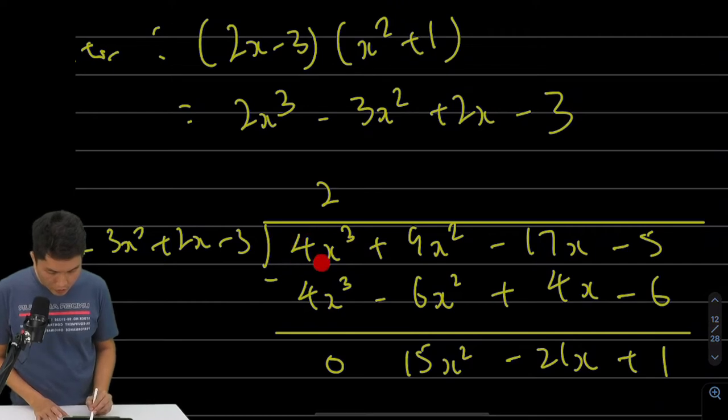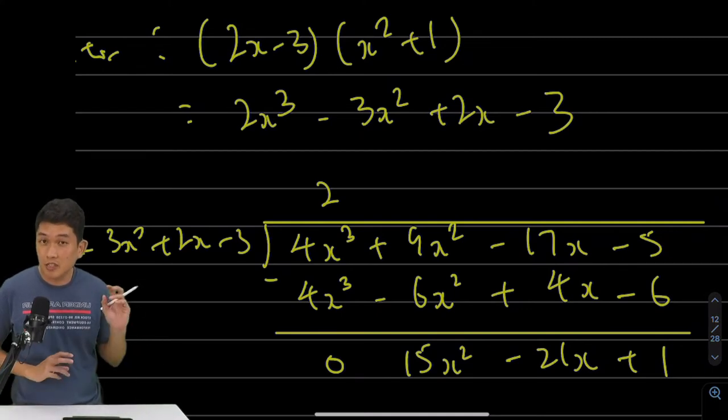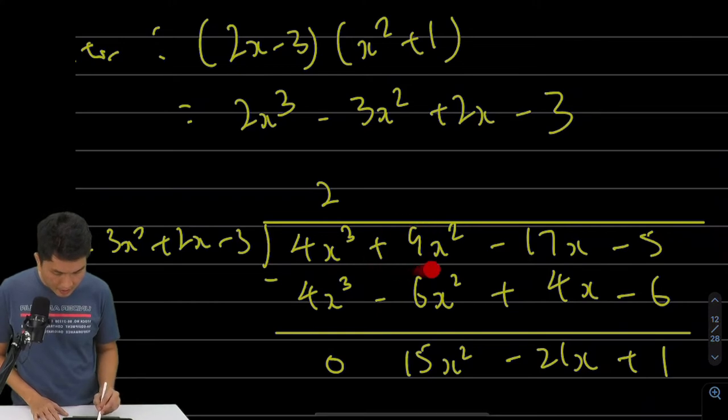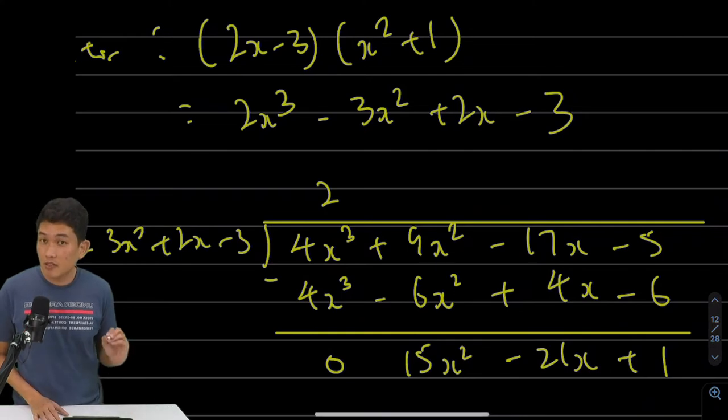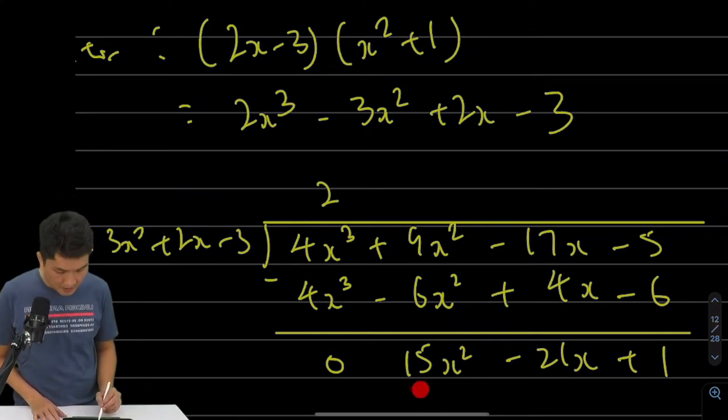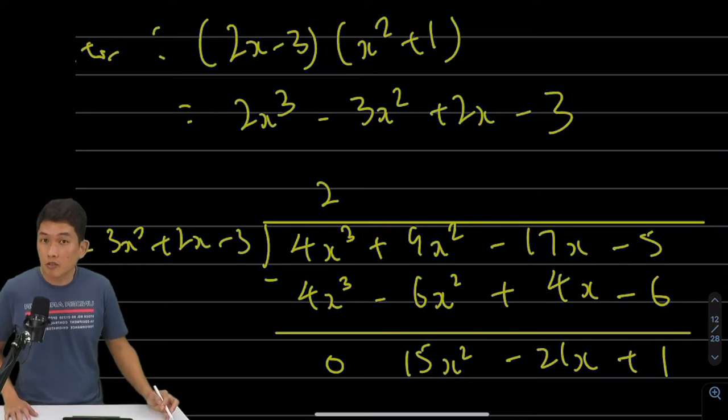So a 4x cube minus a 4x cube is 0. That is great because that means I have managed to get rid of the degree 3 term. Next, next term is 9x square minus a negative 6x square. So this is also where students might make mistakes. They might take 9 minus 6. That's actually 9 minus negative 6. So that's a 9 plus 6. That will give us a 15x square. Now if you carry on with the rest, you should get this. And this is where I'm going to stop my long division.